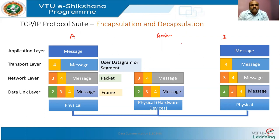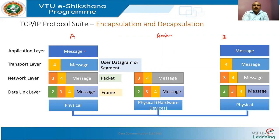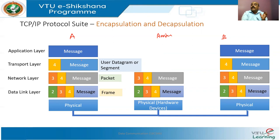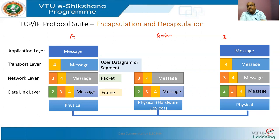This message is taken by the transport layer and put into smaller pieces. The transport layer divides it into smaller pieces so it can handle the data efficiently. This is called a user datagram if using UDP, or a segment if using TCP. A segment belongs to a connection-oriented service, because TCP is a connection-oriented service.